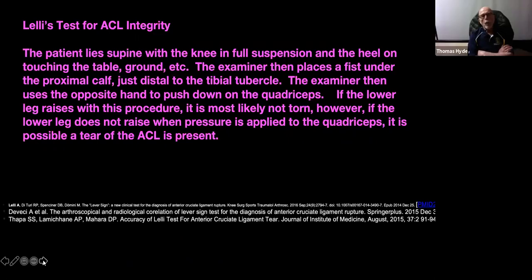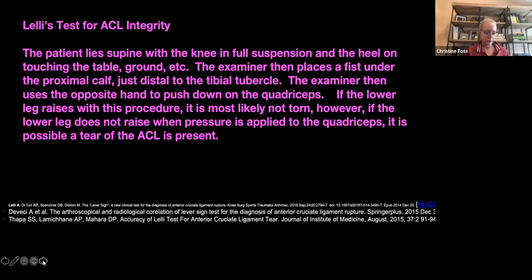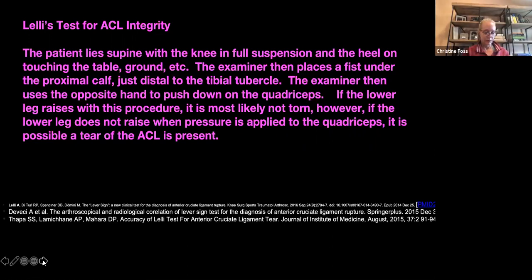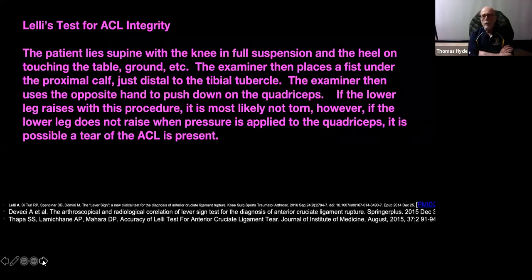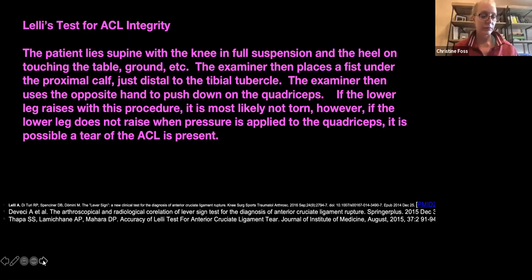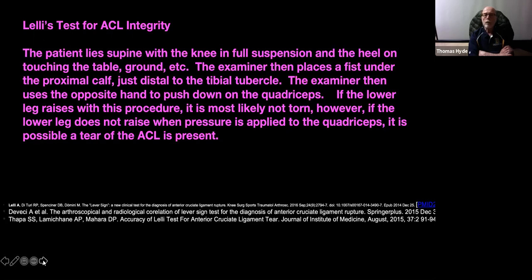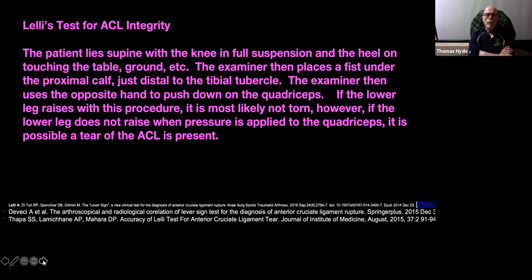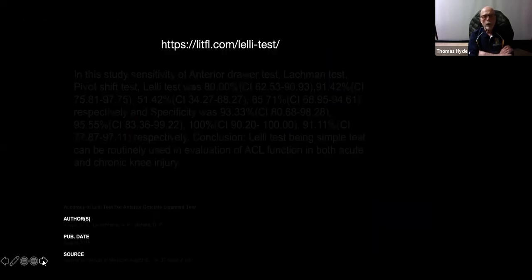Now we're going to go from the BEAR procedure to Lely's test for ACL integrity. This was named after an orthopedic surgeon in France. When he first came upon this procedure to test for ACL tears, he called it the Lely test and claimed it had 100% accuracy — but that's not true. Current data shows that while it remains fairly good, it's certainly not 100%. Basically, instead of doing an anterior drawer or pivot shift — which can be very painful with an acutely torn ACL — Lely's test is a gentler alternative.